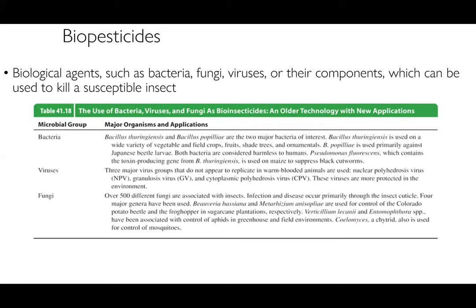Next up are biopesticides — biological agents, particularly bacteria but sometimes fungi and viruses, or their components, which can be used to kill susceptible insects. Here's a table showing some major bacteria, viruses, and fungi associated with biopesticides. Biopesticides are biological agents we use to control pests in an agricultural setting — though they could also be used in a home setting, we're principally thinking about agricultural use here.